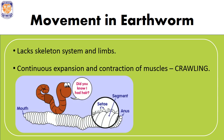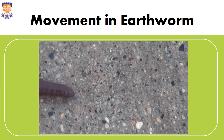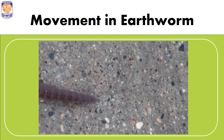The earthworm's entire body is divided into segments — ring-like structures present on its body. Below their body are some special hair-like structures known as setae. These setae help in the movement of the earthworm from one place to another.